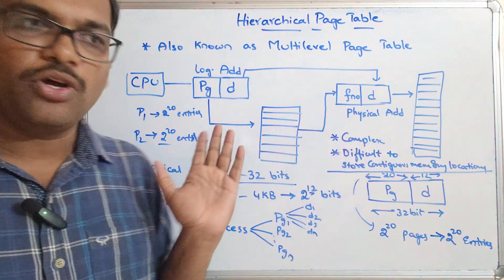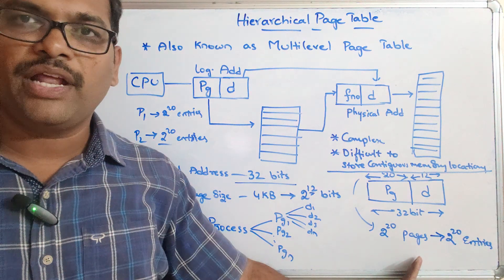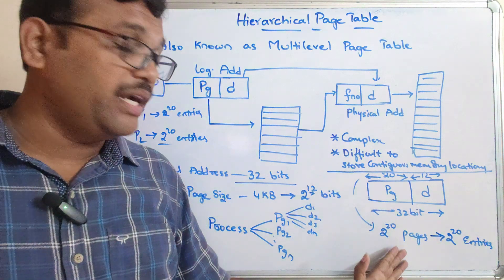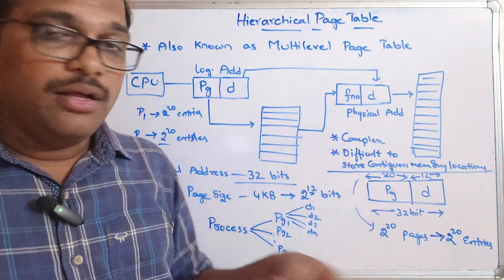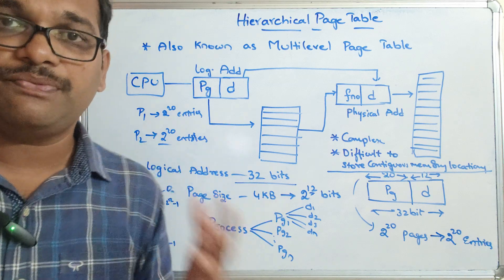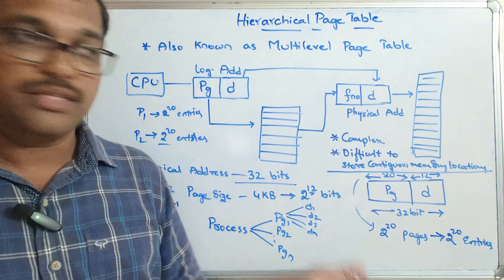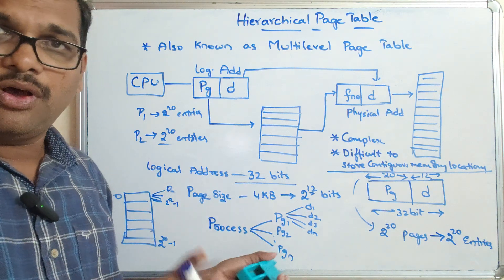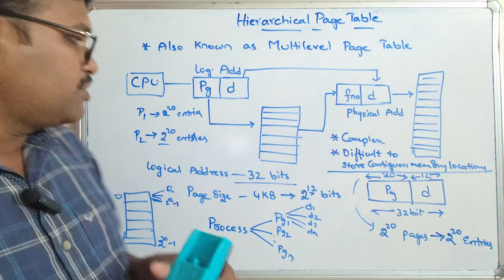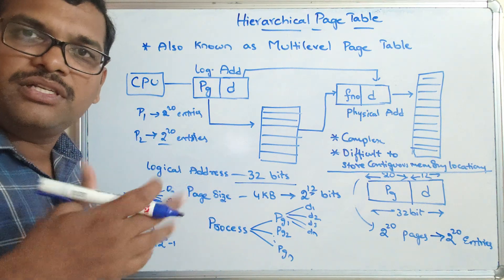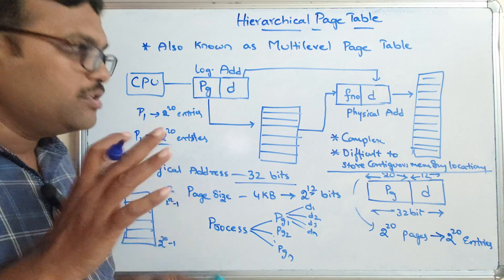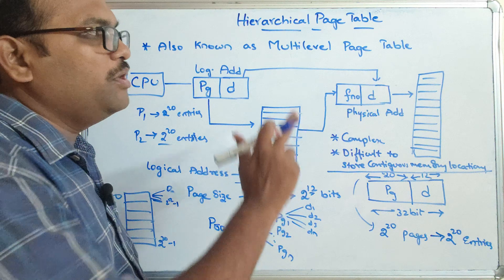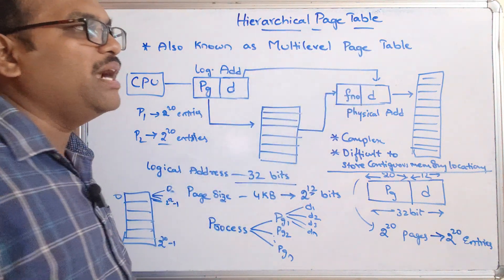So one drawback is complexity — more than 10 lakh entries will be there. And the second one: finding contiguous memory for the 10 lakh entries is difficult. This is not only for one process — if we are executing multiple processes, that many lakh entries should be available. So in order to avoid these difficulties, we move to the hierarchical page table, also called the multi-level page table.